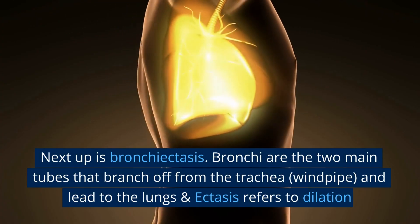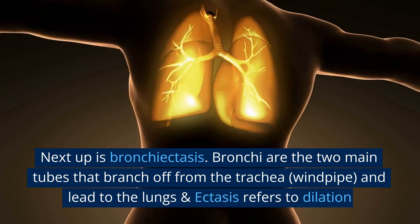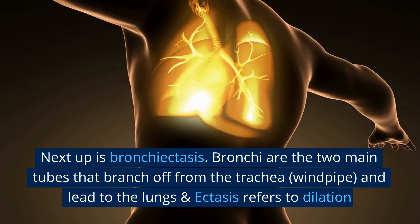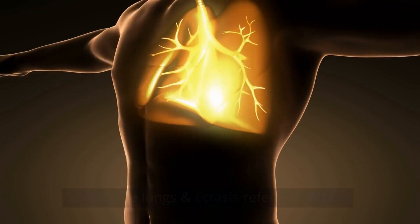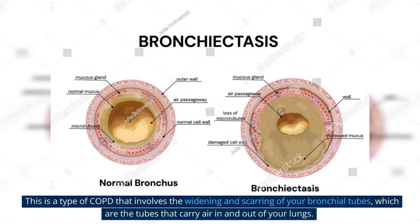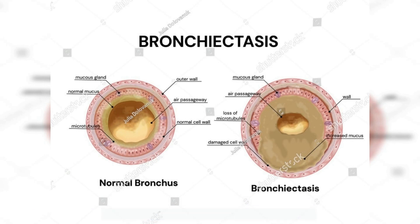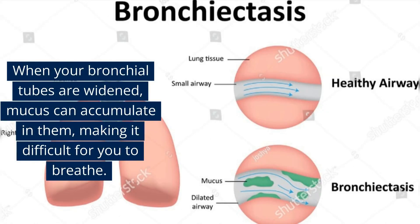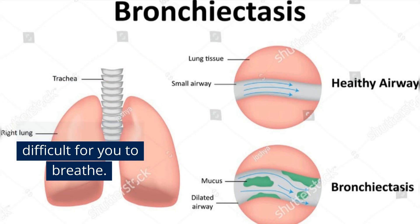Next up is bronchiectasis. Bronchi are the two main tubes that branch off from the trachea, or windpipe, and lead to the lungs, and ectasis refers to dilation. This is a type of COPD that involves the widening and scarring of your bronchial tubes, which are the tubes that carry air in and out of your lungs. When your bronchial tubes are widened, mucus can accumulate in them, making it difficult for you to breathe.